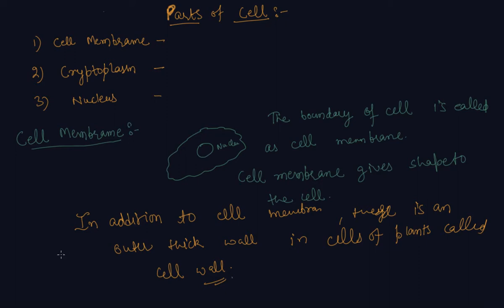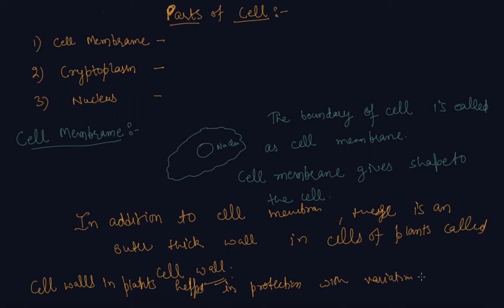Plant cells need protection against variations in temperature. Cell walls in plants help in protection against variation in temperature, high-speed wind, atmospheric moisture, and so on. These are the main functions of the cell wall.